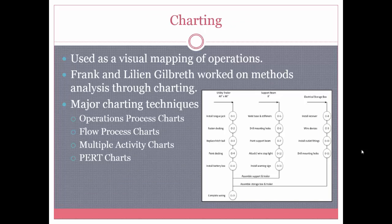Charting is used as a visual mapping of operations. It was developed by Frank and Lillian Gilbreth, who are known as the founders of industrial engineering. The image here shows an operations process chart, where you divide work into different elements — such as Install TongJag, Fasten, and Decking — which all represent an overall cycle of assembling a utility trailer. Besides an operations process chart, there are also other charting techniques such as a flow process chart, a multiple activities chart, and a PERT chart.